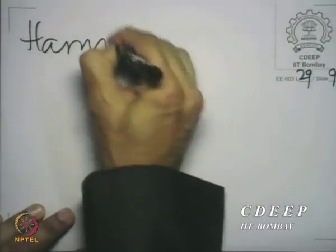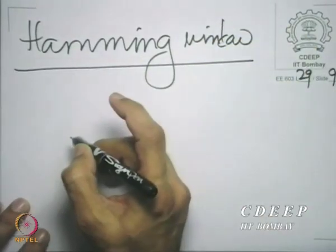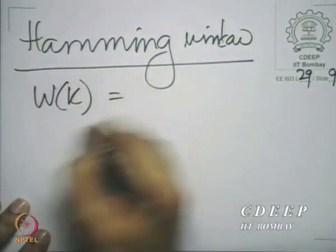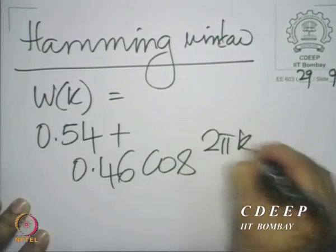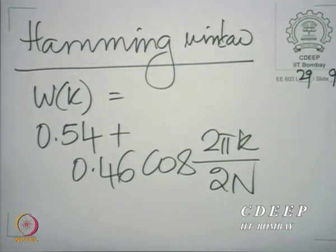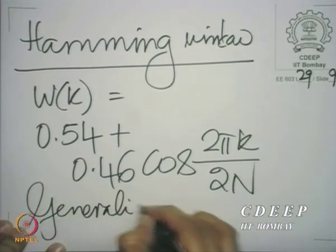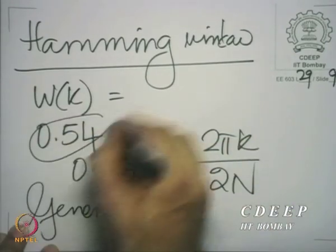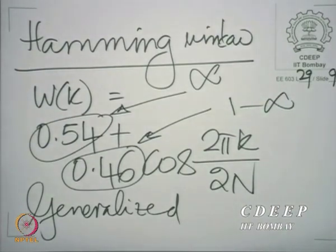The Hamming window — Hann and Hamming are names of researchers who suggested these windows. The Hamming window is described by w(k) equal to 0.54 plus 0.46 cos(2πk / 2N). The numbers 0.54 and 0.46 add to 1 but don't have special sanctity beyond that. In general, one can define a generalized Hamming window where this value is alpha and the cosine coefficient becomes 1 minus alpha.